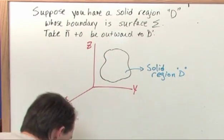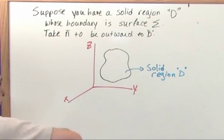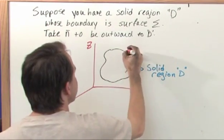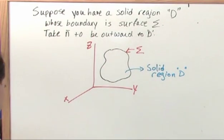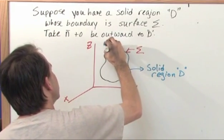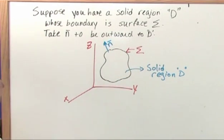The boundary of this region, the actual boundary of the surface of it, is sigma Σ, the same sigma that we've always been using for the surface. We're also going to note that the normal vector is always pointing out of the boundary D.